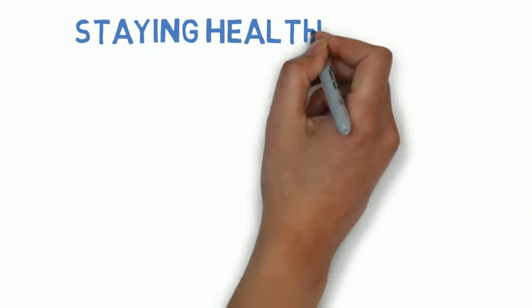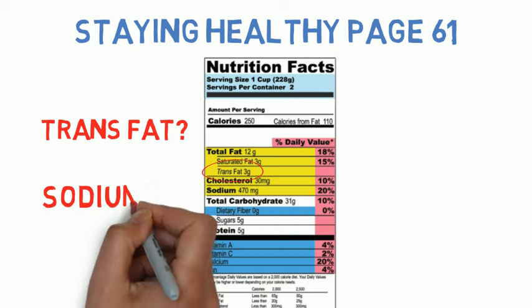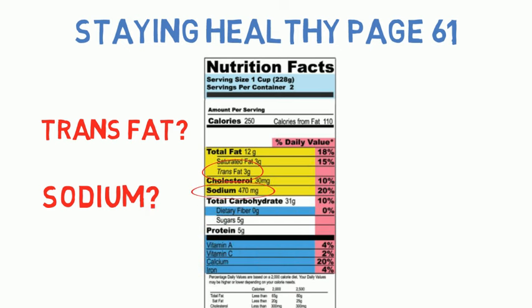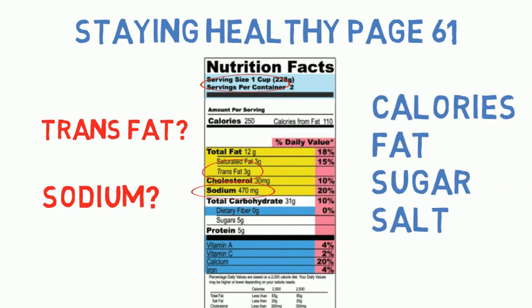Food labels. This diagram is from the Staying Healthy book developed by the Florida Literacy Coalition on page 61. The label is from a package of macaroni and cheese. The colors and numbers will help as you read the food label. Does this packaged food have any trans fat? Does this packaged food have a lot of sodium? Would this be a healthy food to eat? A food label tells you the size of one serving. It also tells you how many servings are in the package. The food label lists the calories, fat, sugar, and salt that are in one serving.